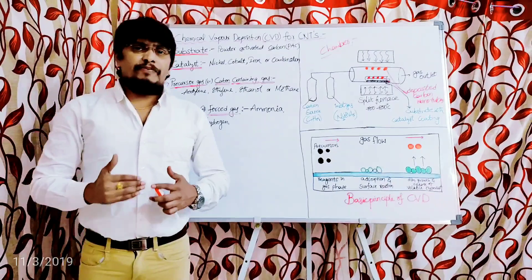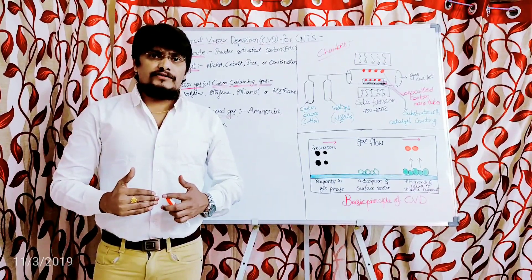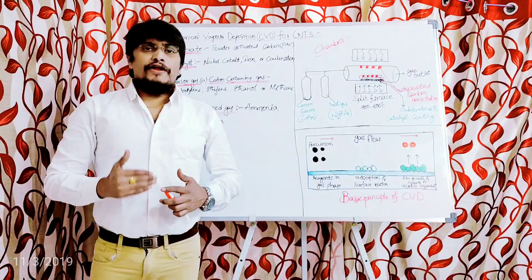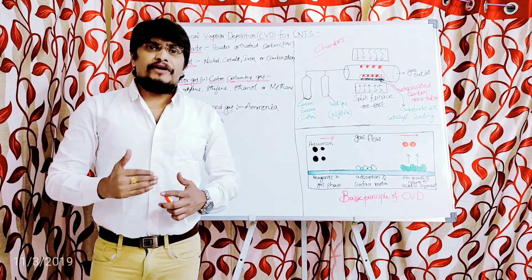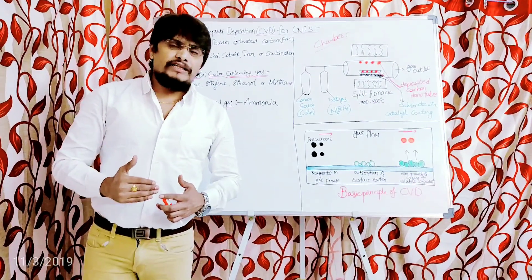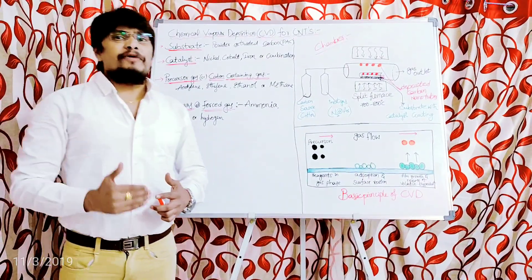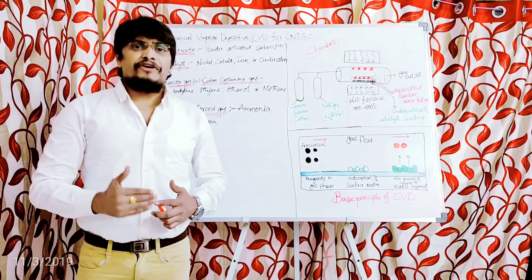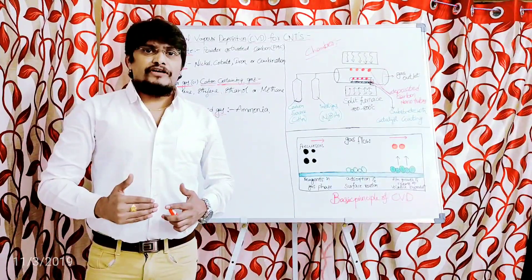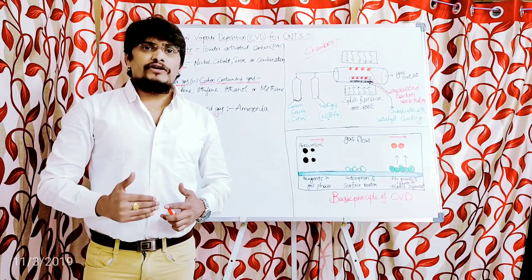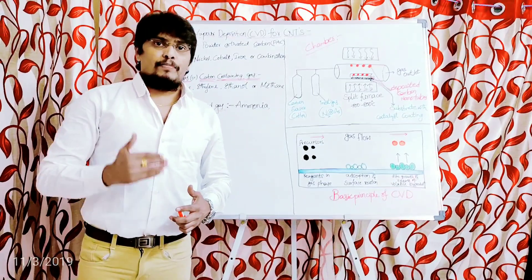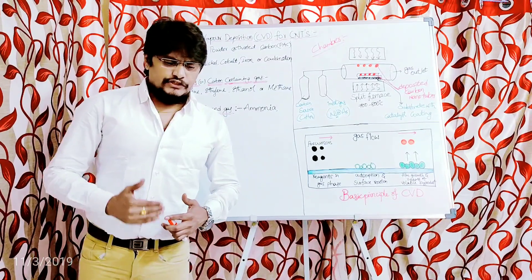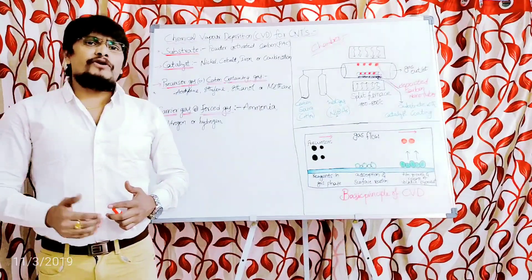First and foremost, we have to discuss why this particular method is called the chemical vapor deposition method. It is so called because during this method, chemical reactions take place between the substrate molecules and the precursor molecules on the surface of the substrate.